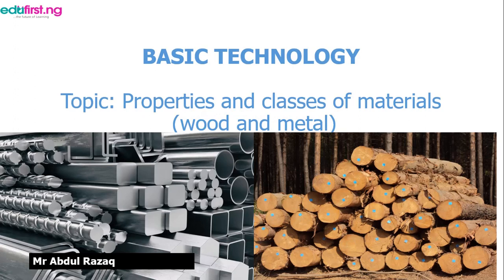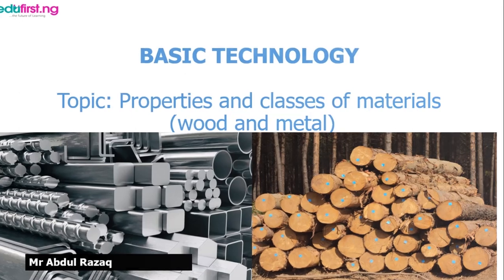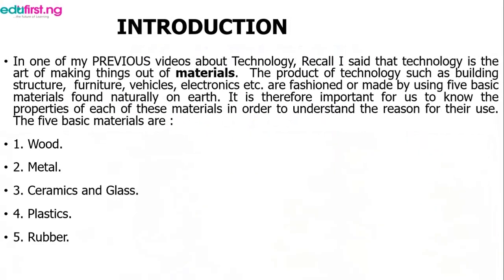Hi there, this is Mr. Abderazak and the topic for this video is properties and classes of materials. This is going to be the first part of a three-part series. This first part is going to be talking about wood and metal, the second part about ceramics and glass, and the third part about plastics and rubber. We fashion out products of technology using five basic materials: wood, metal, ceramics and glass, and plastics and rubber.